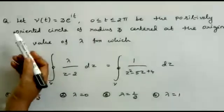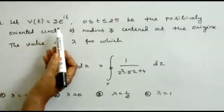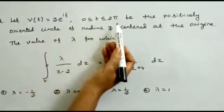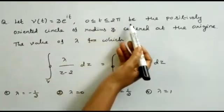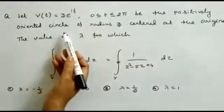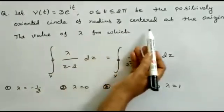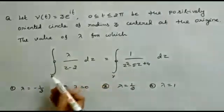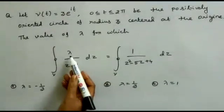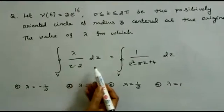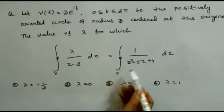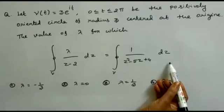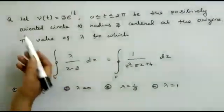Next time we will talk about problem governing. Let gamma of t be equal to 3 times e to the power it, where t lies between 0 and 2π. This varies from 0 to 2π with a positively oriented circle of radius 3 centered at the origin. We have to calculate the value of lambda.